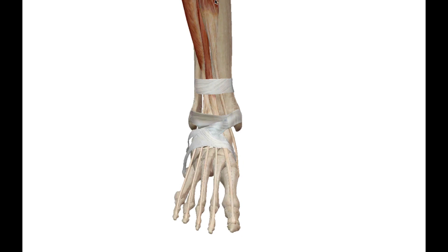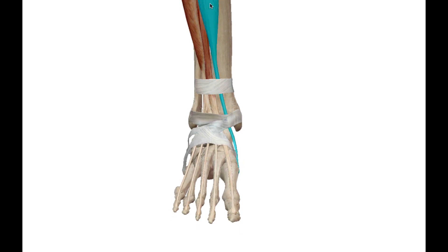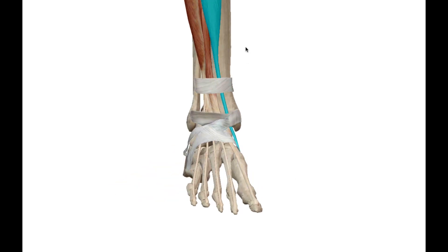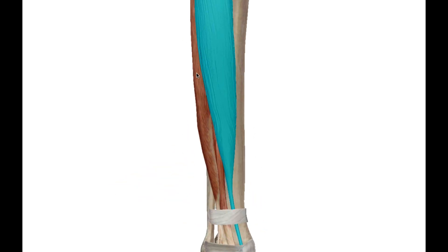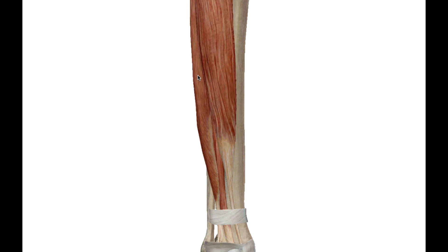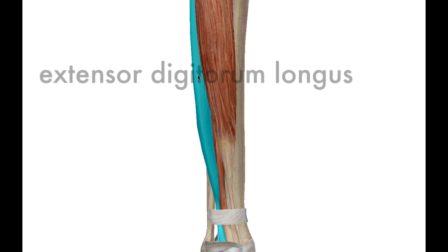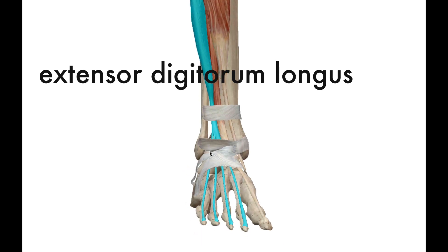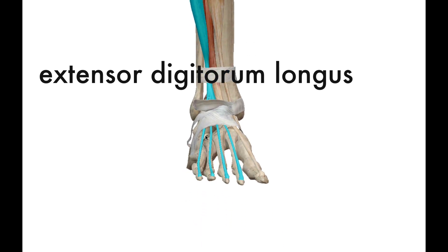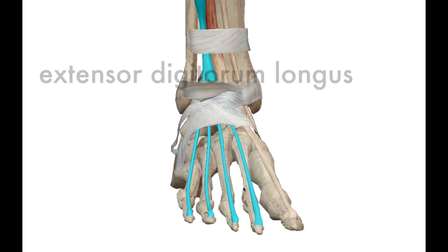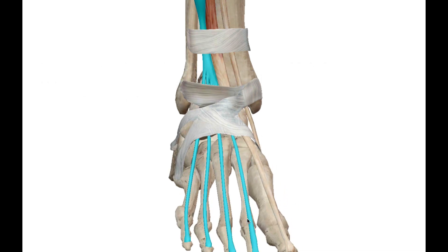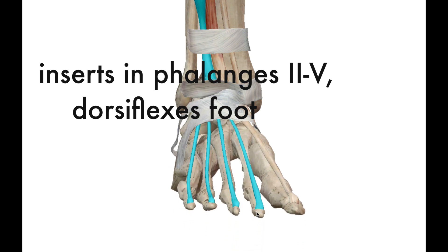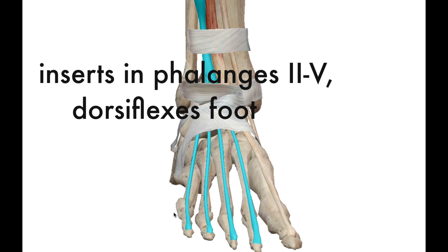So the tibialis anterior inserts at the first metatarsal, which means it inverts the foot. Moving more laterally, the next large muscle is the extensor digitorum longus, which runs down the ankle and helps with dorsiflexion of the foot and flexing phalanges two through five.